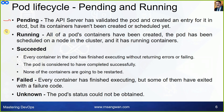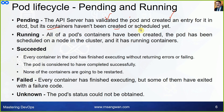Pending doesn't just mean waiting in a queue — there are multiple reasons. For example, if you have a sequence of pods where one must be created before another, the pod will remain in Pending state until the prerequisite pods are created. Pending means the API server has validated the pod definition and created an entry for it in etcd, but its containers have not been created or scheduled yet. Running means all the pod's containers have been created, the pod has been scheduled on a node in the cluster, and it is running its containers. Succeeded means every container in the pod has finished executing without errors. Failed means every container has finished but some executed with a failure code. Unknown means the status cannot be obtained from the store.